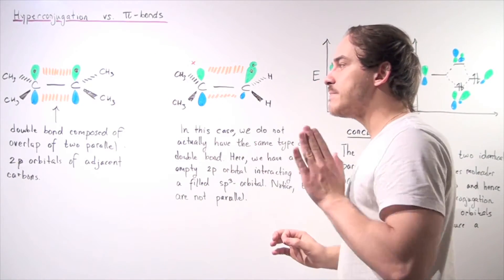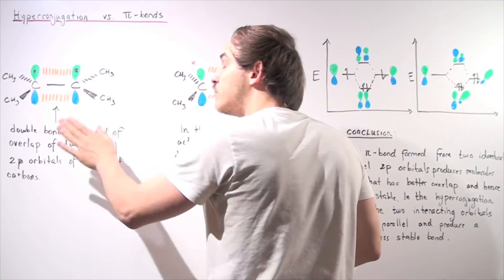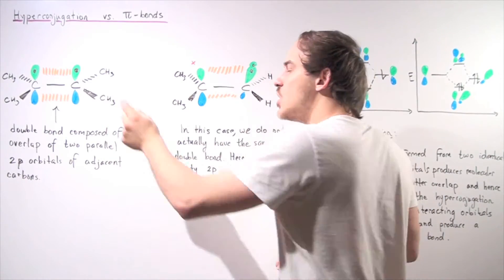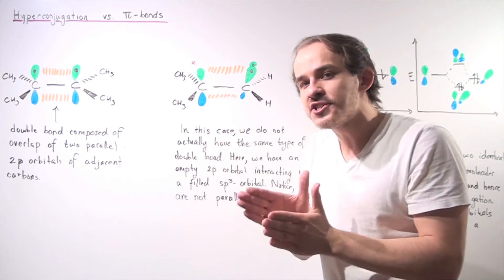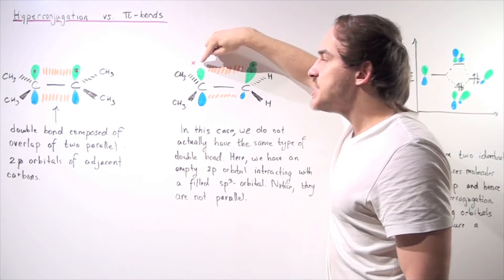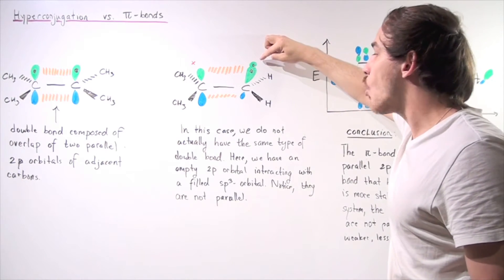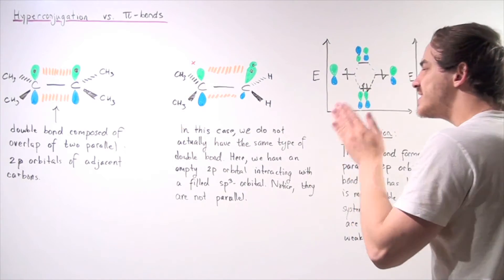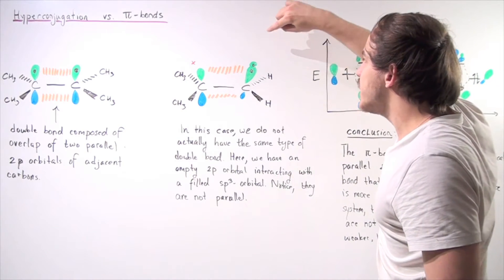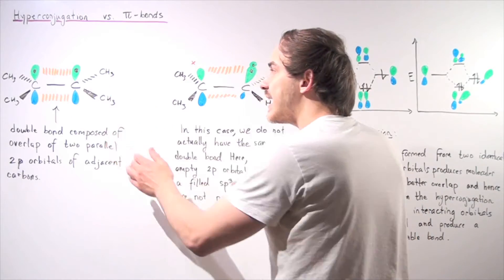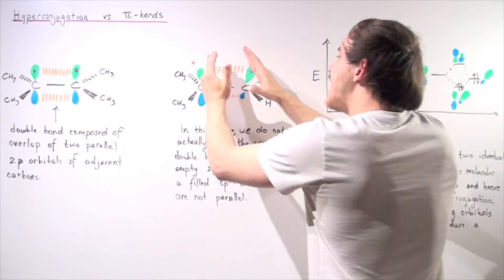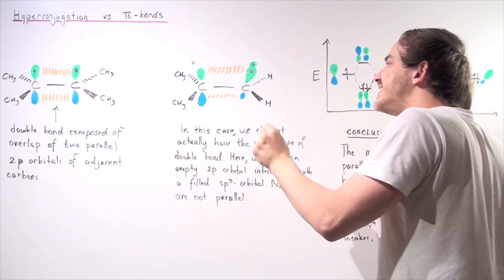These two bonds are not exactly the same thing. The pi bond is formed from the overlap of two identical 2p orbitals. But in the hyperconjugation case, we have a slightly different situation — this is not a pi bond. This is the overlap of an empty 2p orbital and a filled sp3-hybridized orbital. In the pi bond, the two 2p orbitals are exactly parallel, but in hyperconjugation the angles are slightly off, giving us a slightly different overlap.